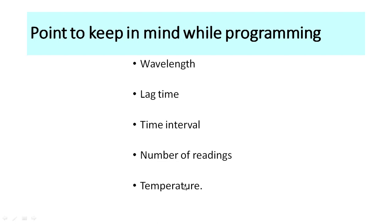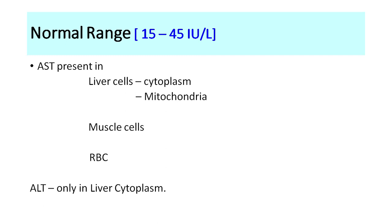The temperature is usually 30°C or 37°C. We must know which temperature is set on the instrument, because normal values differ between 30°C and 37°C. Worldwide, the test is generally performed at 37°C. The normal range of these enzymes at 37°C is 15 to 45 international units per liter.